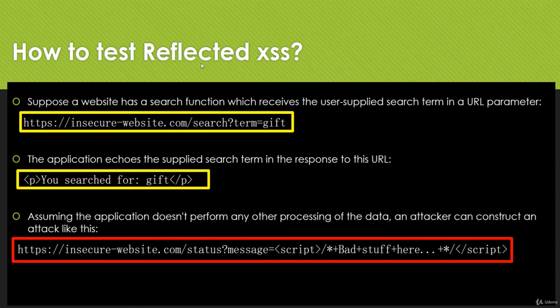So how can we test reflected XSS? Suppose we have this website which says insecure-website.com/search?term=gift. They are using a GET parameter, and if we inject this GET parameter we can perform reflected XSS. As you can see, after the search term, instead of 'gift' we have inserted our script — our payload — and if the payload gets executed it will show an alert box on the website.